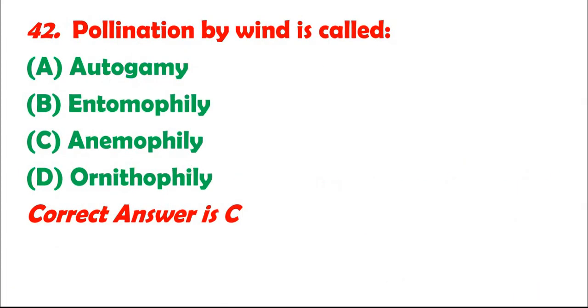Question 42: Pollination by wind is called: A. Autogamy. B. Entomophily. C. Anemophily. D. Ornithophily. Correct answer is C.